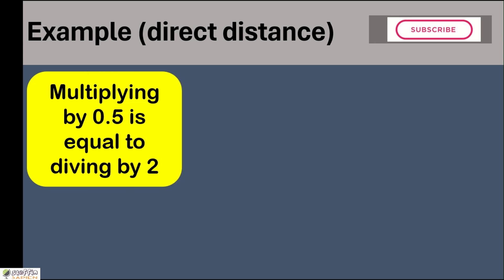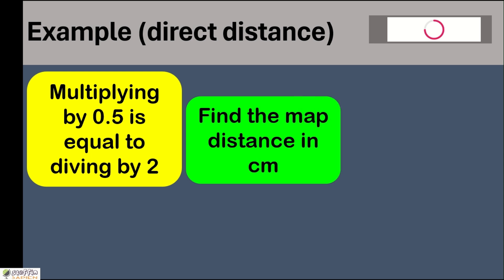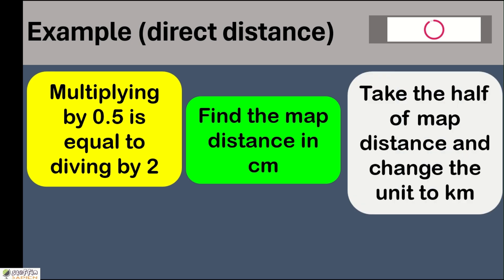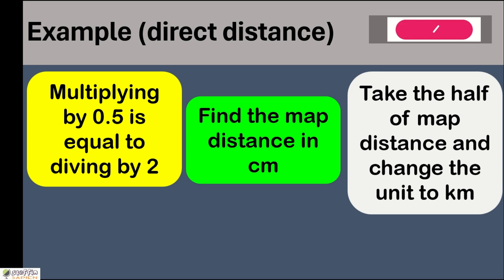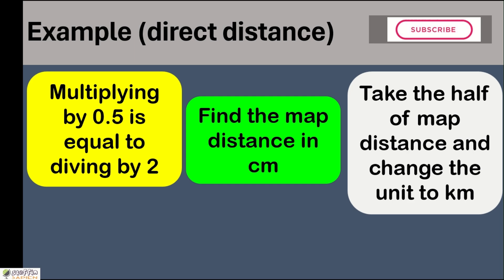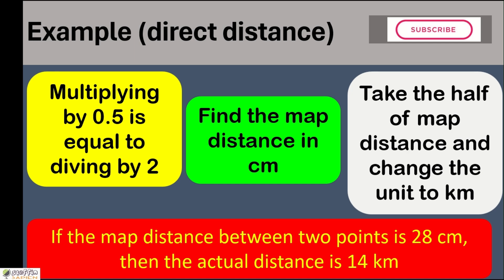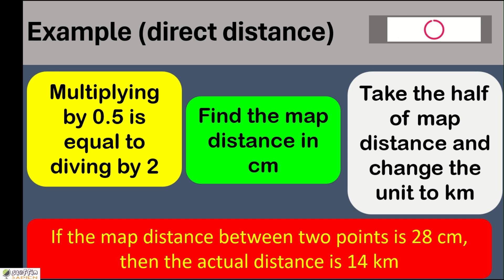To simplify the calculation: multiplying a number by 0.5 is equal to dividing it by 2. So instead of multiplying by 0.5, find the map distance in centimeters using the ruler, take half of it, and change the unit to kilometers. For example, if the map distance between two points is 28 centimeters, then the actual distance is half of it — 14 kilometers.